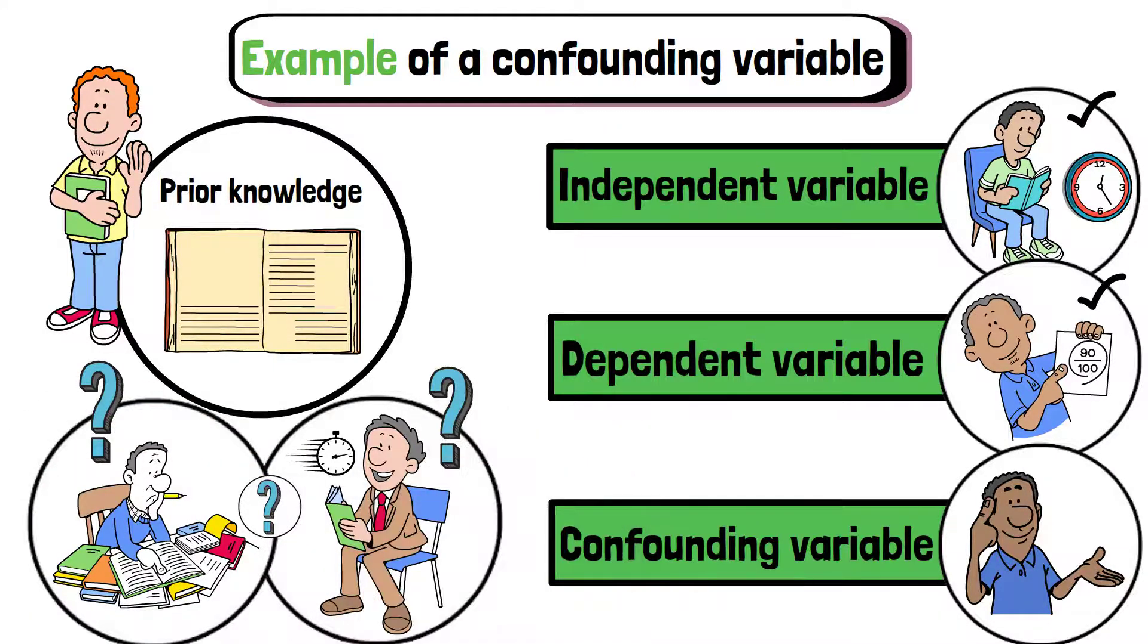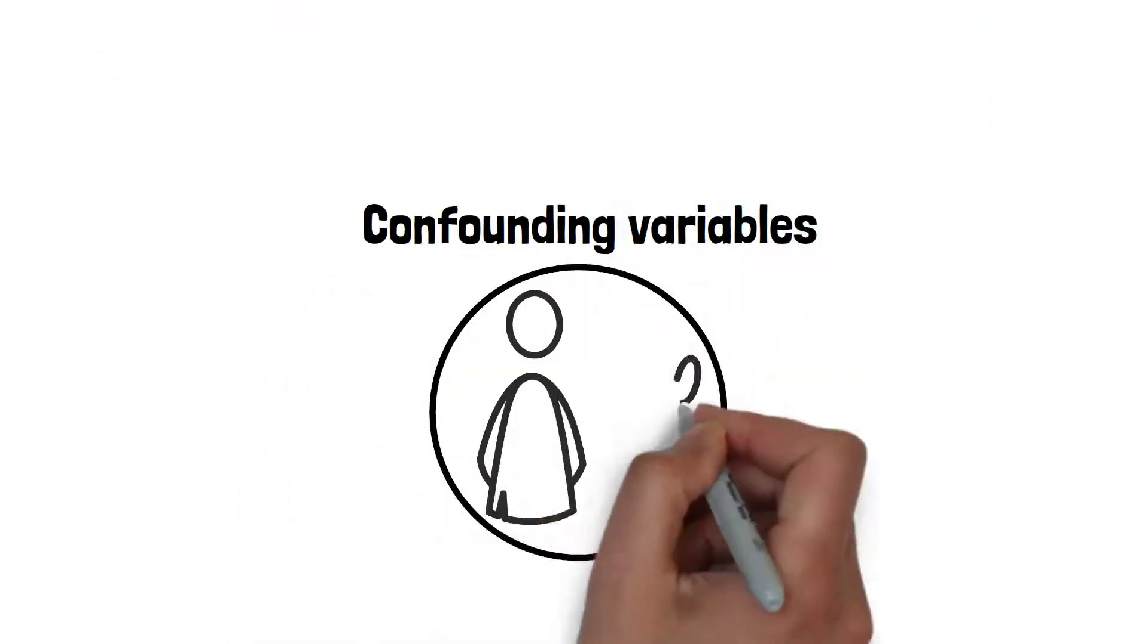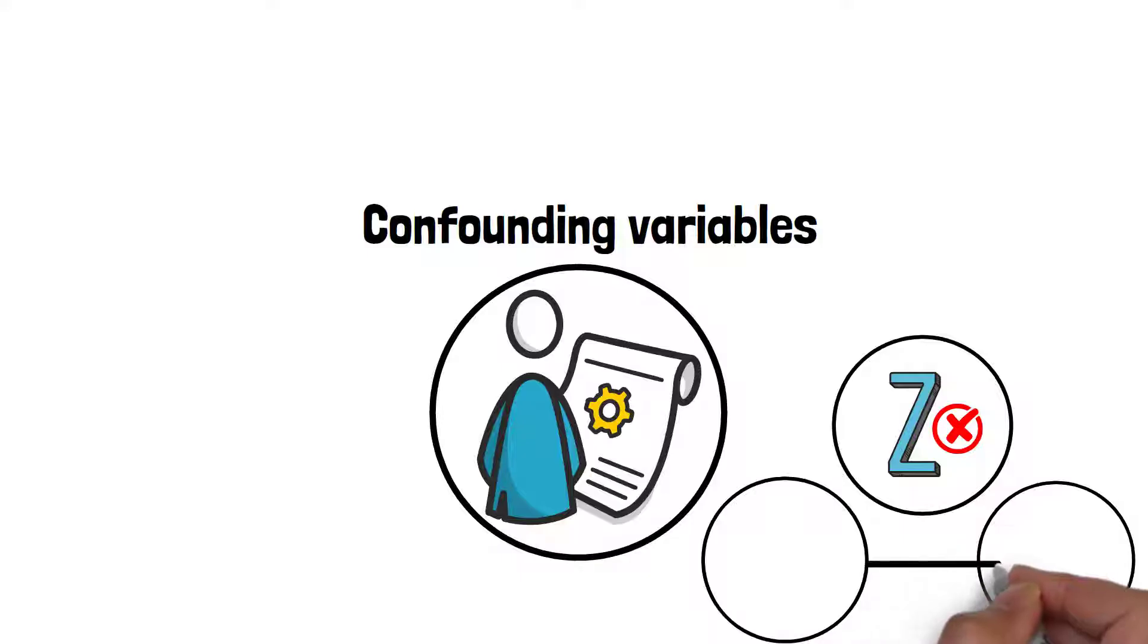Here we can see that confounding variables are important because they can lead to inaccurate conclusions. If a researcher doesn't account for these variables, they might think that there's a direct relationship between the independent and dependent variables, when in fact something else is influencing the outcome.